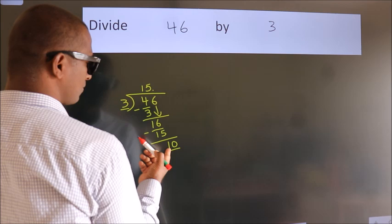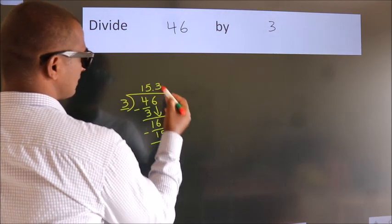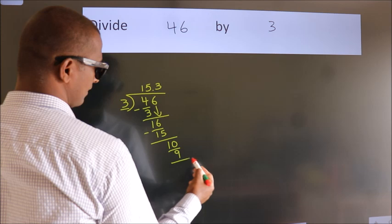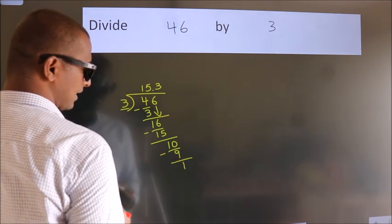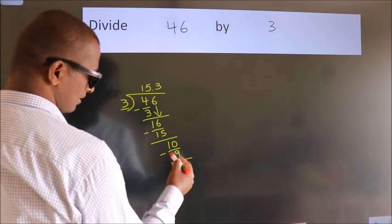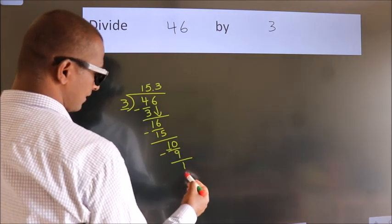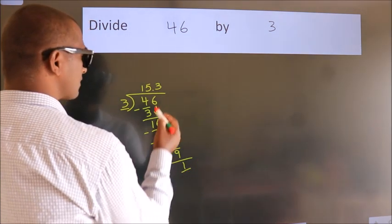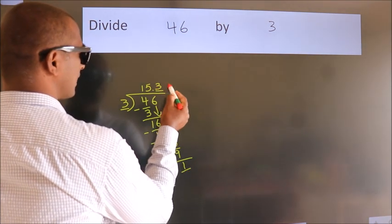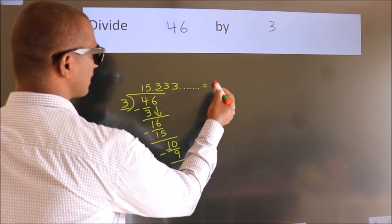A number close to 10 in the 3 table is 3 threes, 9. Now we subtract. We get 1. Now, you observe: we had 1 here, and we got 1 again. That means this number keeps on repeating. So this is our quotient.